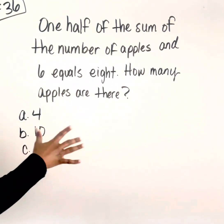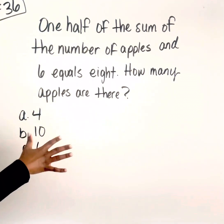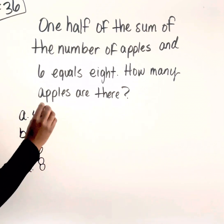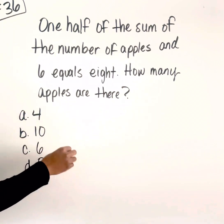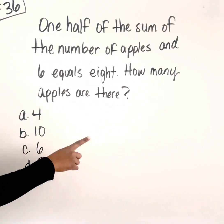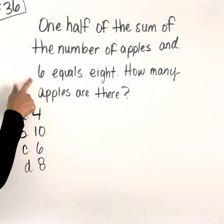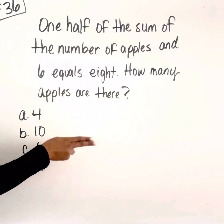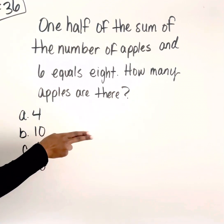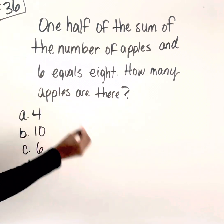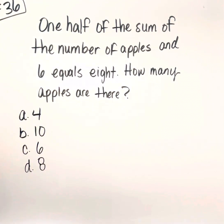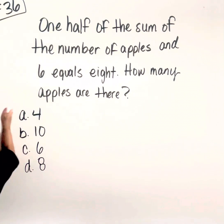This is a perfect example of how you have to have that foundational subskill laid down. First, you have to know how to actually translate the sentence. And then second, you actually have to know how to solve. So let's go through and break it down so that we can create our equation.